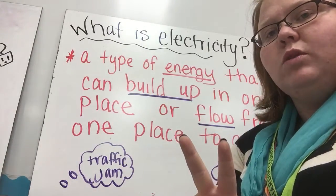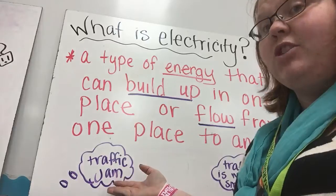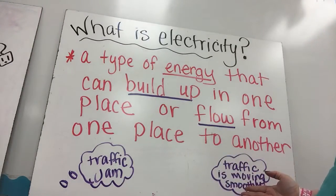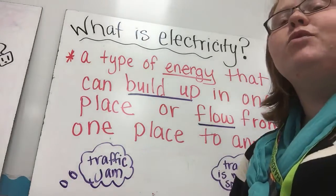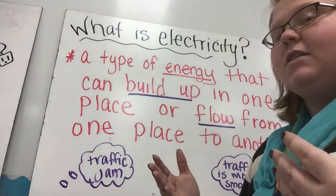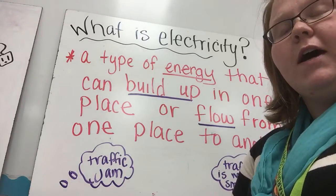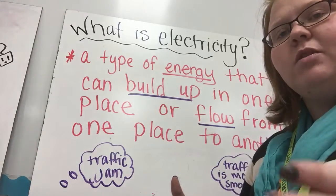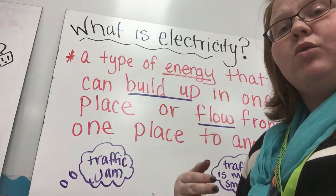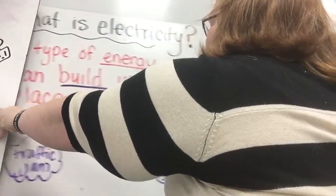So what are those two types? Well, one of them causes a traffic jam — and we've all been part of a traffic jam. The other one is where traffic is wonderful: it's moving at the rate it's supposed to, moving smoothly. Those are two analogies you can use to compare the two types of electricity to traffic. So what are the actual names of those two types? Let's discuss that.